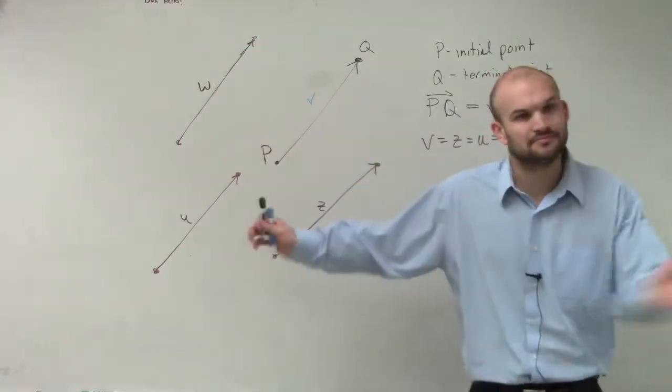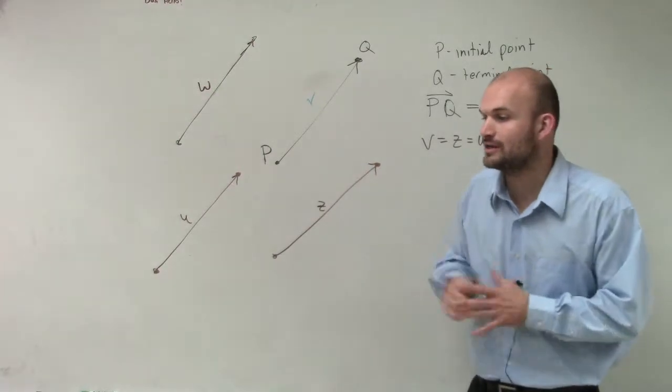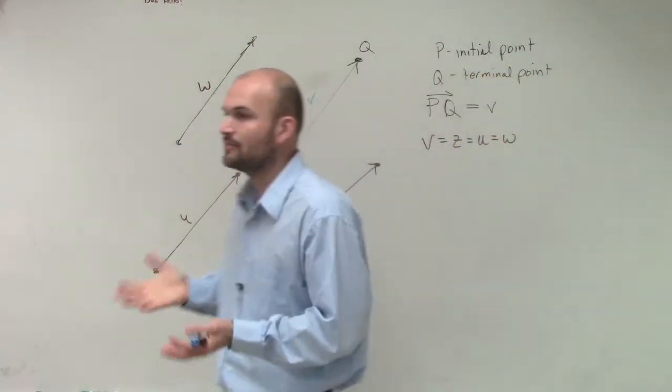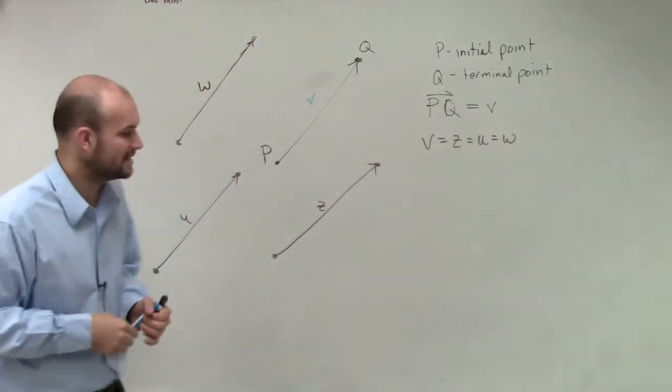Right now, they're just on this plane and they can be all over. All we know is as long as they're on there and they have the same qualities, then they're equal. But we need some way to start comparing vectors and also to be able to work with them a little bit easier.